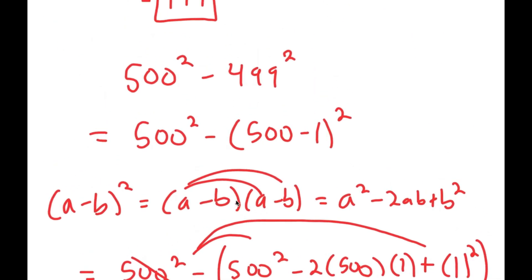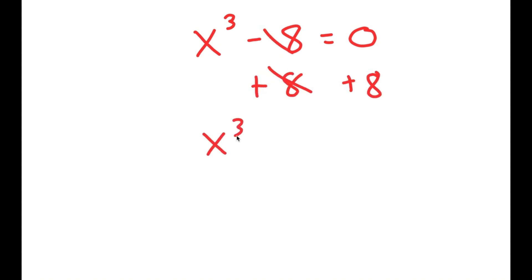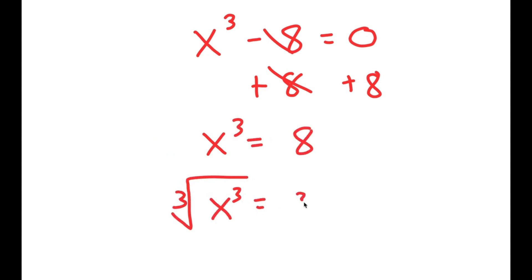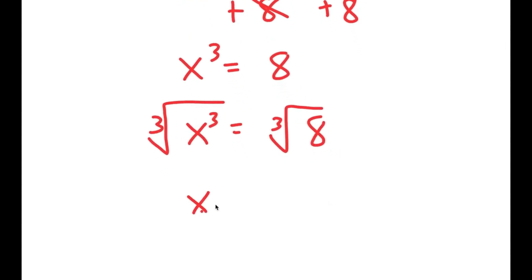So again I get 999 as my answer. Now in this video I'm going to solve the equation x to the power of 3 minus 8 is equal to 0. How most people solve this is they add 8 on both sides to get x cubed equals 8, then take the cube root on both sides. The cube root of x cubed is x, and the cube root of 8 is 2, so they get x equals 2, which is a solution.